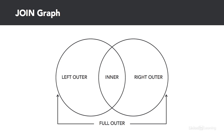To get an understanding of how the joins function, let's take a look at a Venn diagram. We have two overlapping circles which indicate the different types of joins and how they function. The inner join will return all matching records from both tables. Going back to set theory, if we were to join both sets and return the results for all values that exist in both, that would be the inner join — it would not return records that don't exist in both tables.